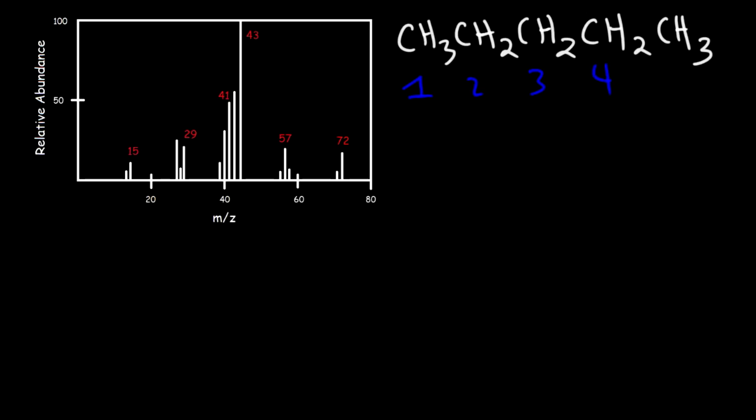If we break the C1-C2 bond it can split up into a CH3 group and a butyl group. Typically one is going to be a radical and the other one is going to have a positive charge.